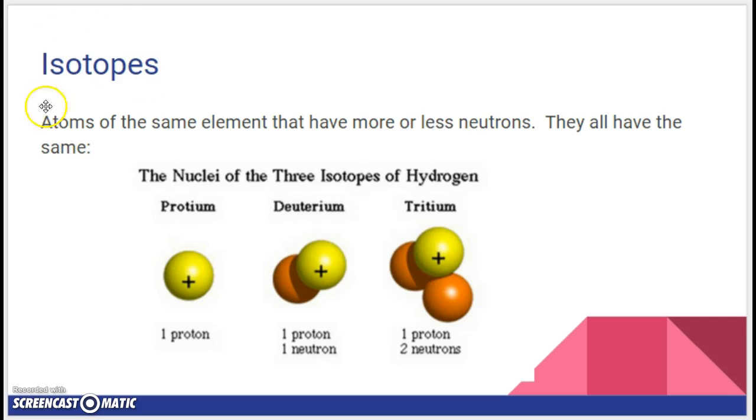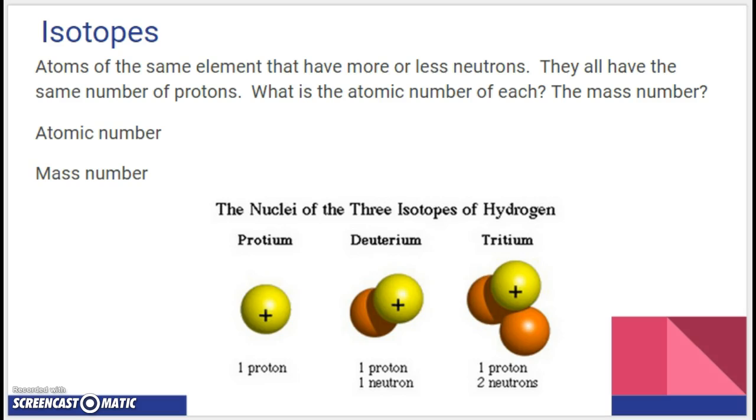Isotopes. A very important vocabulary word. Write it down. Isotopes equals atoms of the same element that have more or less neutrons. However, they all have the same what? Look at these examples. These are each isotopes of hydrogen. So they all have different numbers of neutrons. But they all have the same number of protons. And it's the proton that determines what element it is.